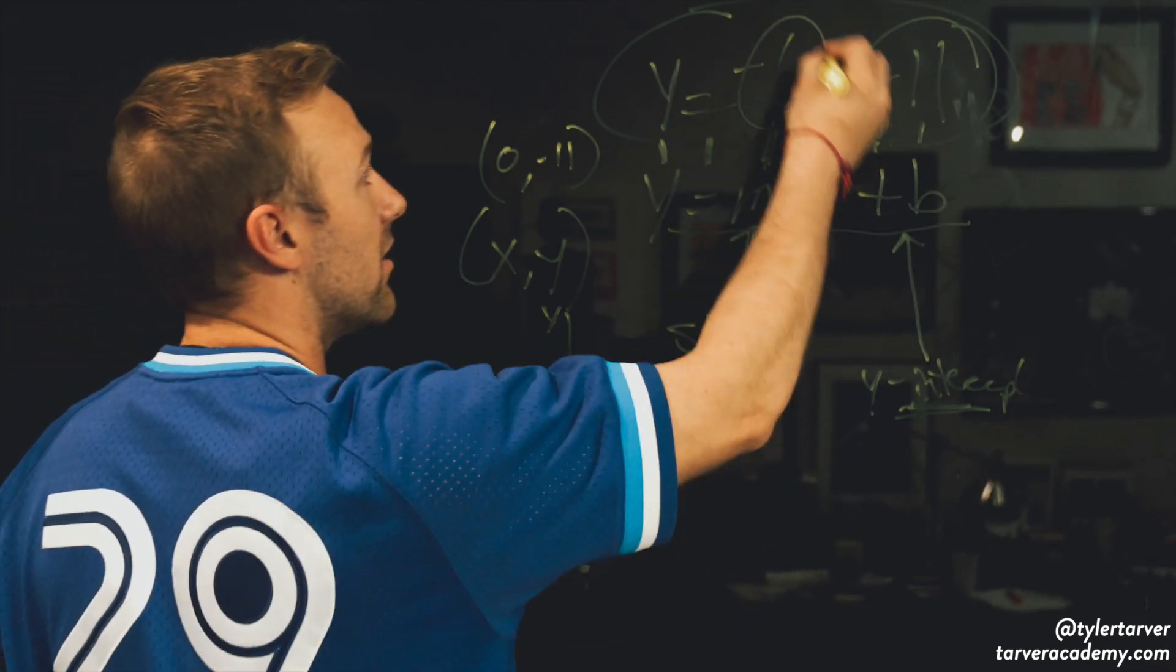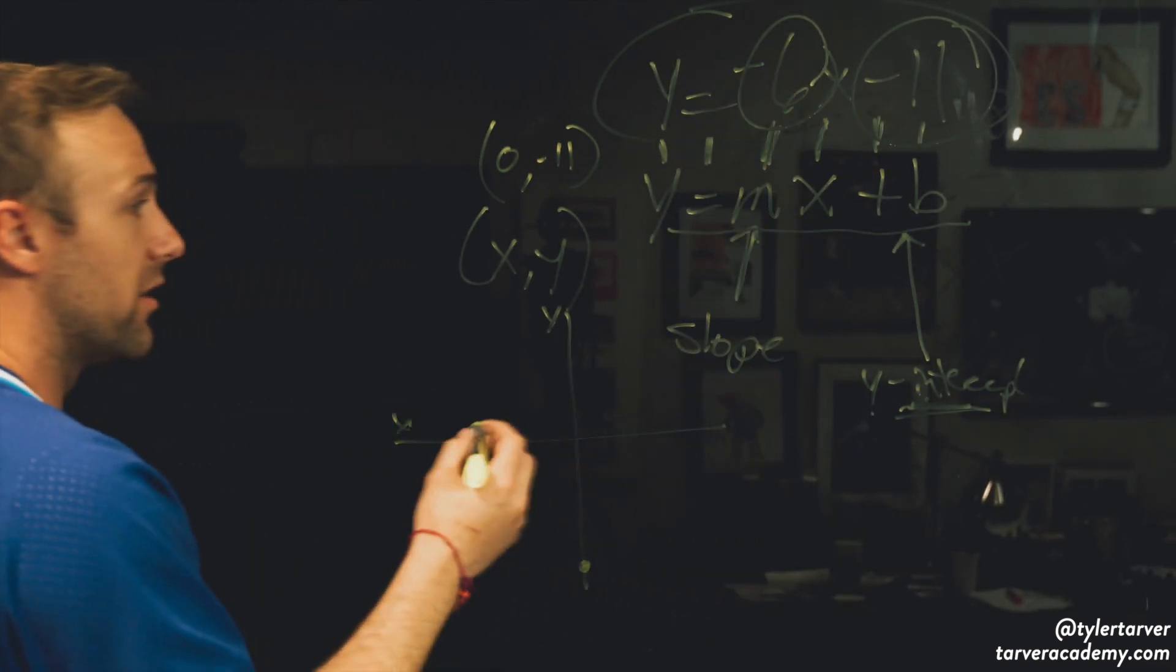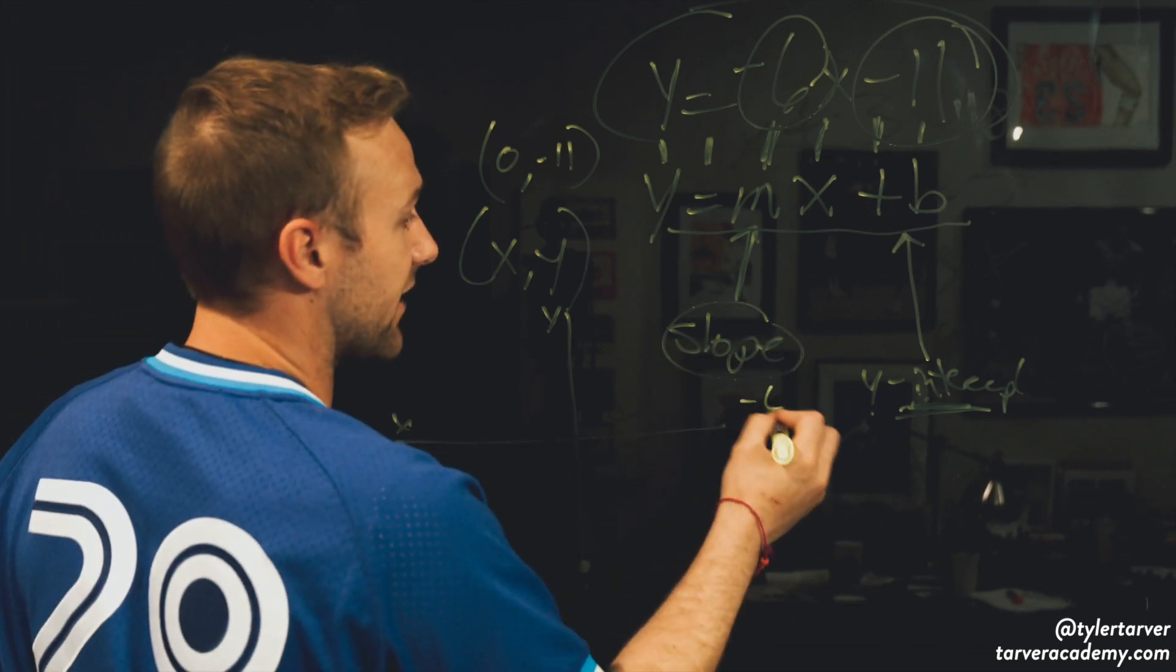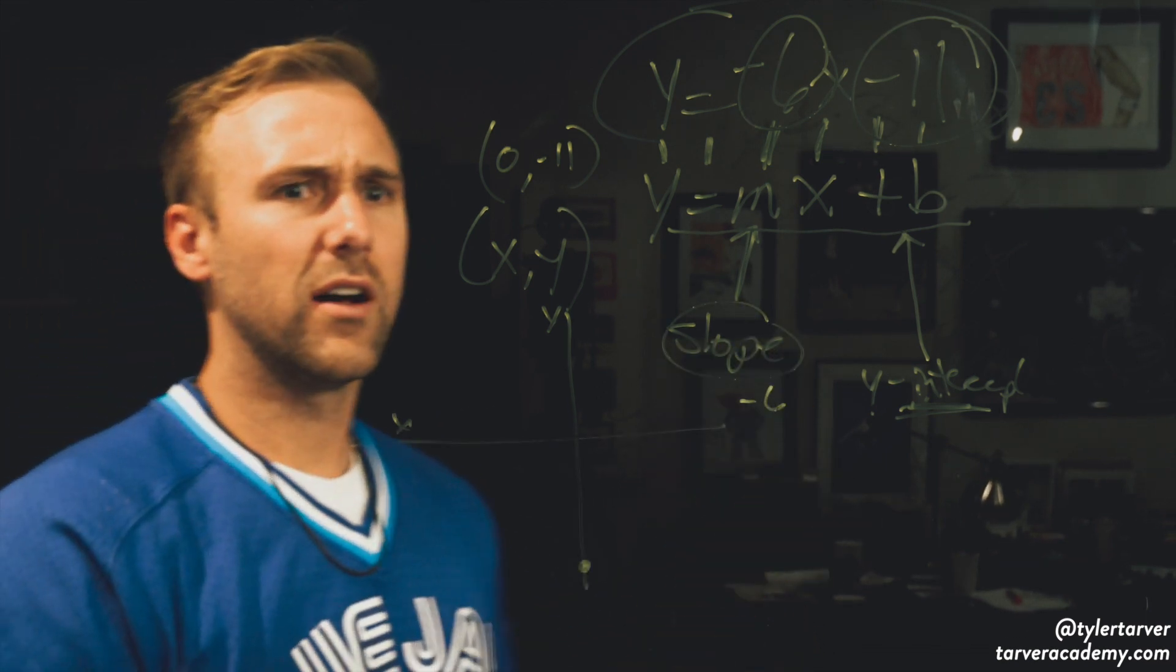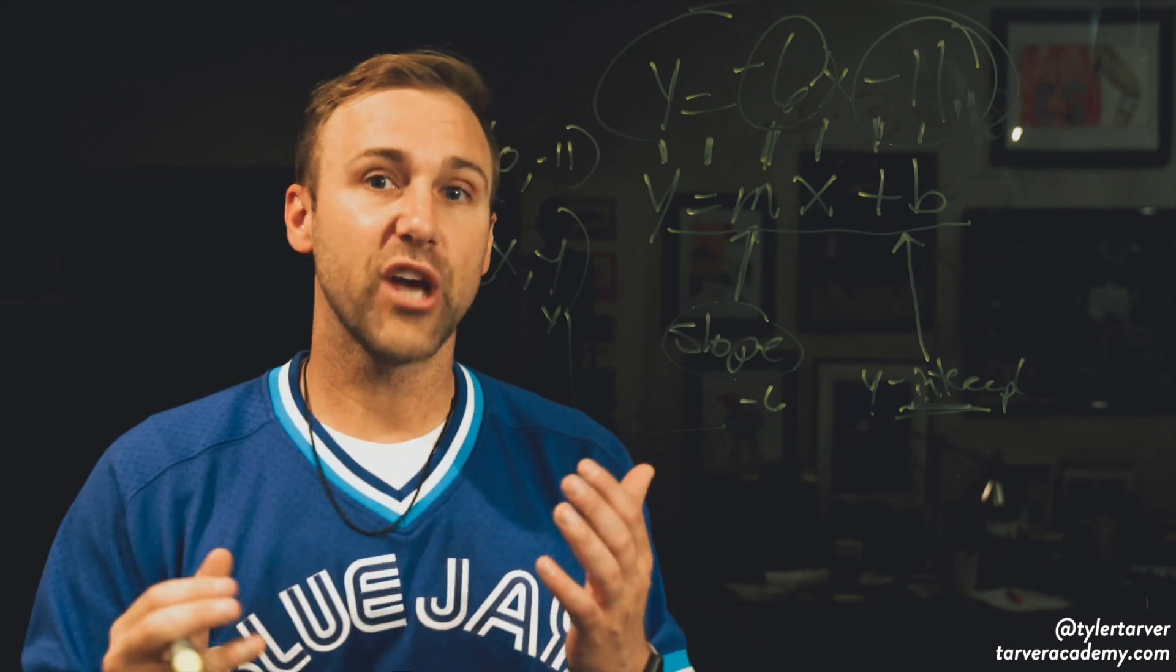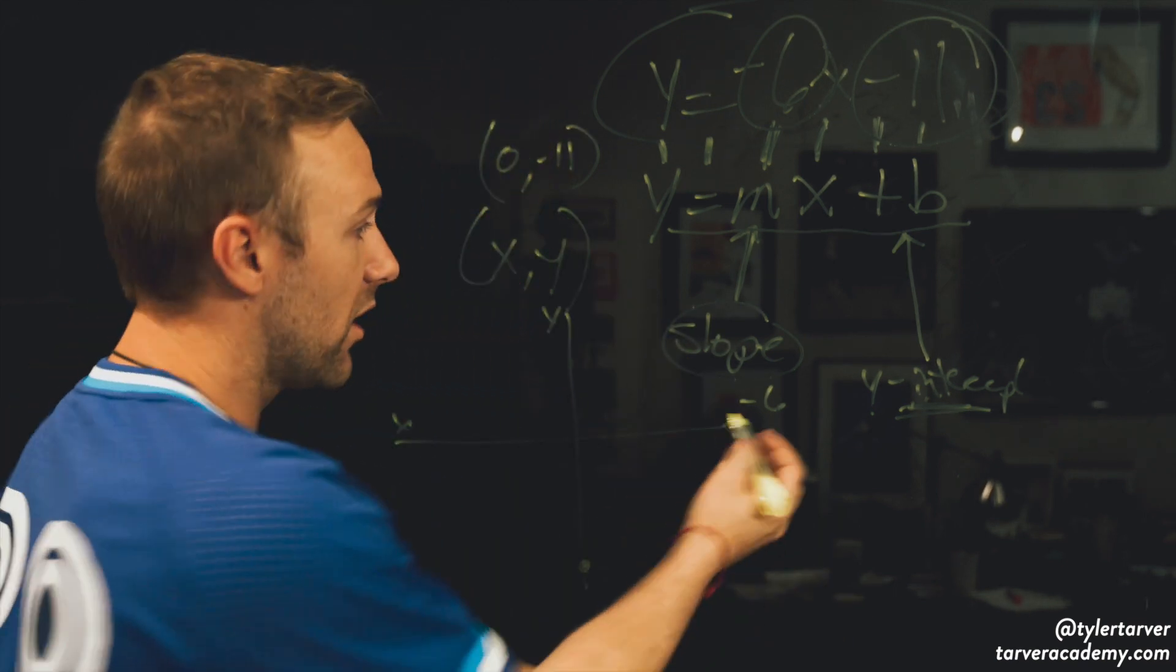All right, now from there, I know that my slope right here is negative 6. And you're thinking, well, a slope should be like a rate of change, which means it's a number over another number.